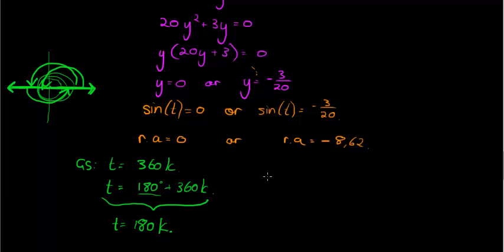On the other side, I get my general solution. t is either equal to negative 8.62 plus 360 times k. Or the solution for sin is 180 minus, but I am subtracting a positive angle, which means I am going in that direction. So it's going to be 180 plus 8.62, which gives me 188.62 plus 360 times k.